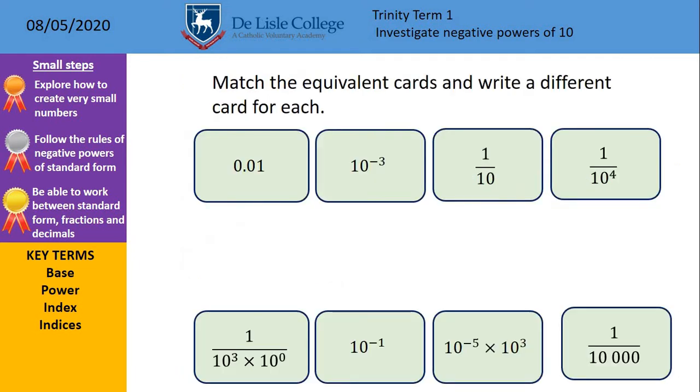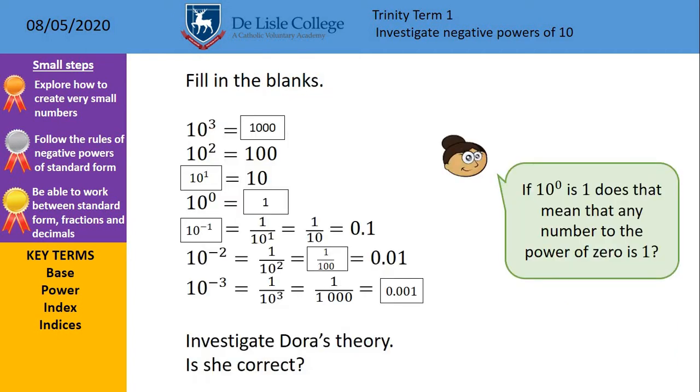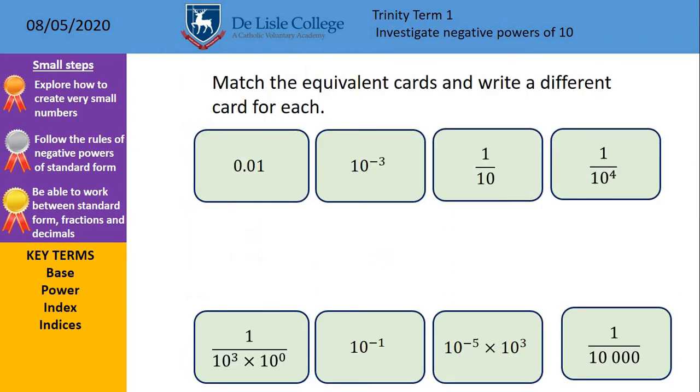So, time to match the equivalent cards and write then a different card for each. So we can see on the previous slide there, we've got three numbers. We've got an ordinary number in terms of, on the 10 to the minus 2, we've got the 10 to the minus 2 as standard form. Then we've left it as a fraction, 1 over 100. Then we've got the decimal 0.01. So there are three main methods to write it. On this one, I'd like you to match up the cards. So that top four, one of those will match with each of the bottom four below, and then you're going to write out either a decimal, standard form, or fraction to show a third way for writing each one.